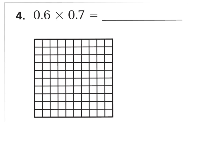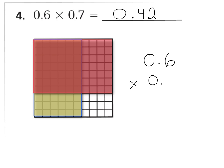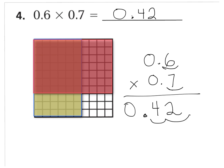If you have 2 different colored pencils, go ahead and shade 6 tenths horizontally and 7 tenths vertically. Whatever you see overlapping, count up how many hundredths are overlapping and write that down as your product. Go ahead and press pause now. As you can see with my model, I shaded 6 tenths vertically yellow and 7 tenths vertically pink. Whatever you see overlapped, I've got 6 seven times, which would be 42 hundredths. Treating as whole numbers: 7 times 6 is 42, and we have 2 spaces to the right of the decimal, so the answer is 0.42 hundredths.